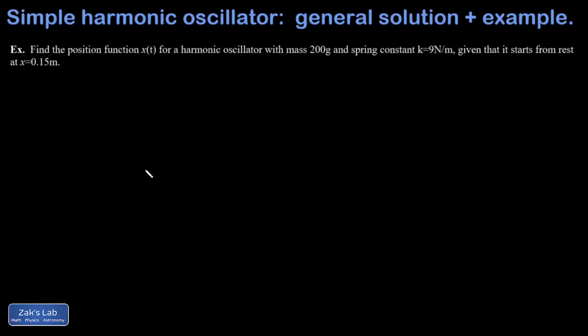Here's an example where we're given some initial conditions to apply. We want to find the position function given that the mass is 200 grams or 0.2 kilograms. Our spring constant is 9 newtons per meter. And my initial conditions are that it starts from rest, that means v of 0 equals 0, when the position is 0.15 meters or 15 centimeters. So my initial conditions look like this: x of 0 equals 0.15, v of 0, which is x prime, is equal to zero.